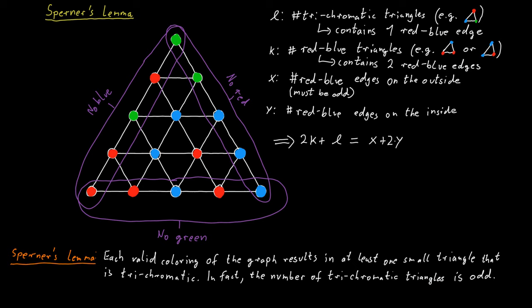And now we just rearrange this equation and get that l is equal to 2 times y minus k plus x. We have argued that x must be odd. Right. Remember, we have seen that the red-blue edges on the outside must be an odd number.